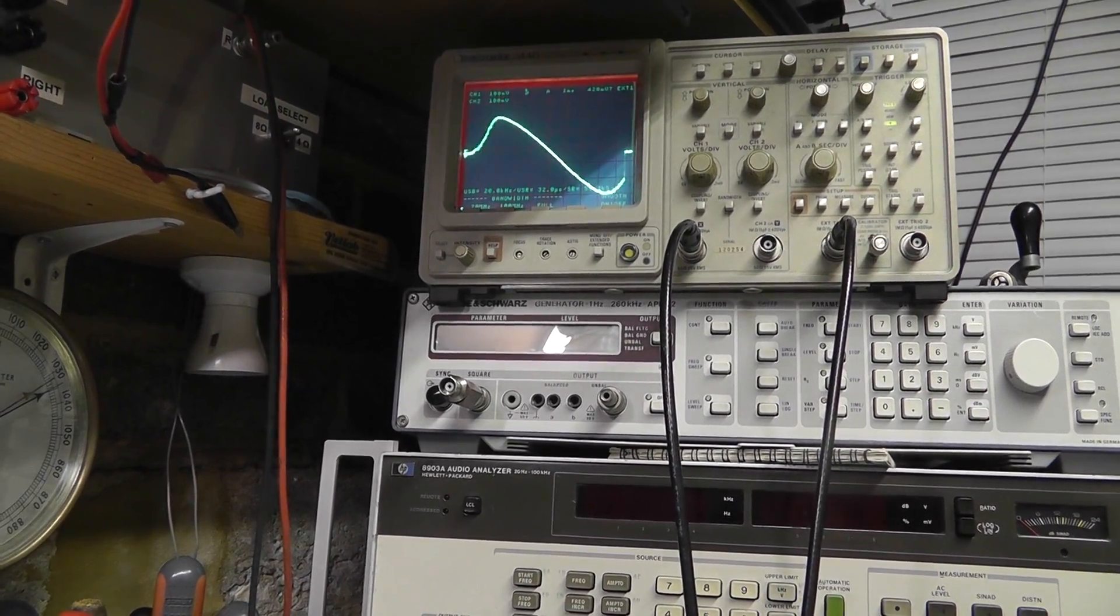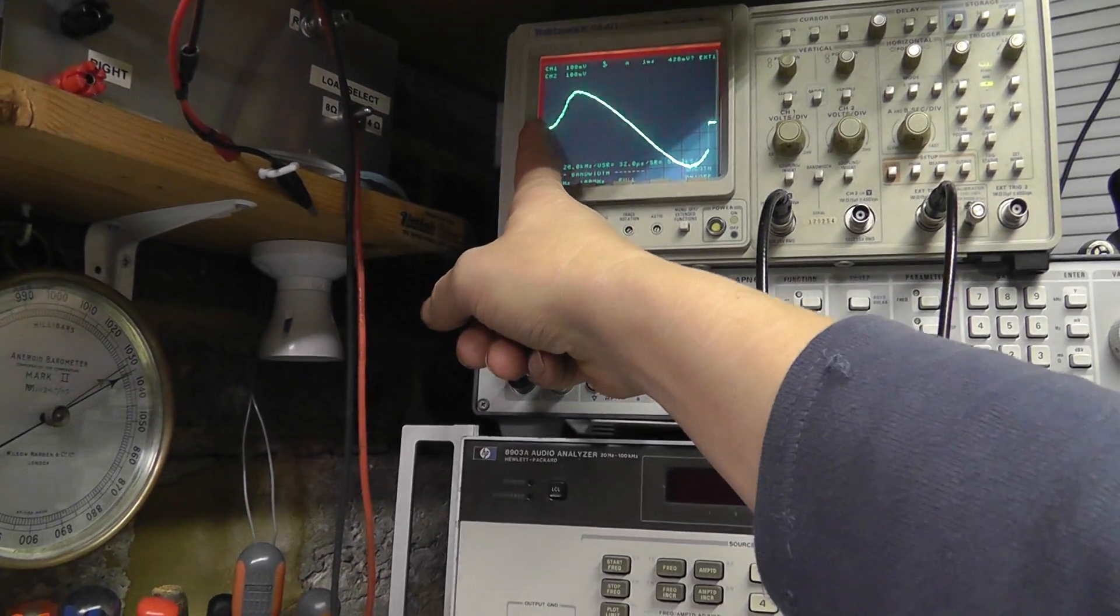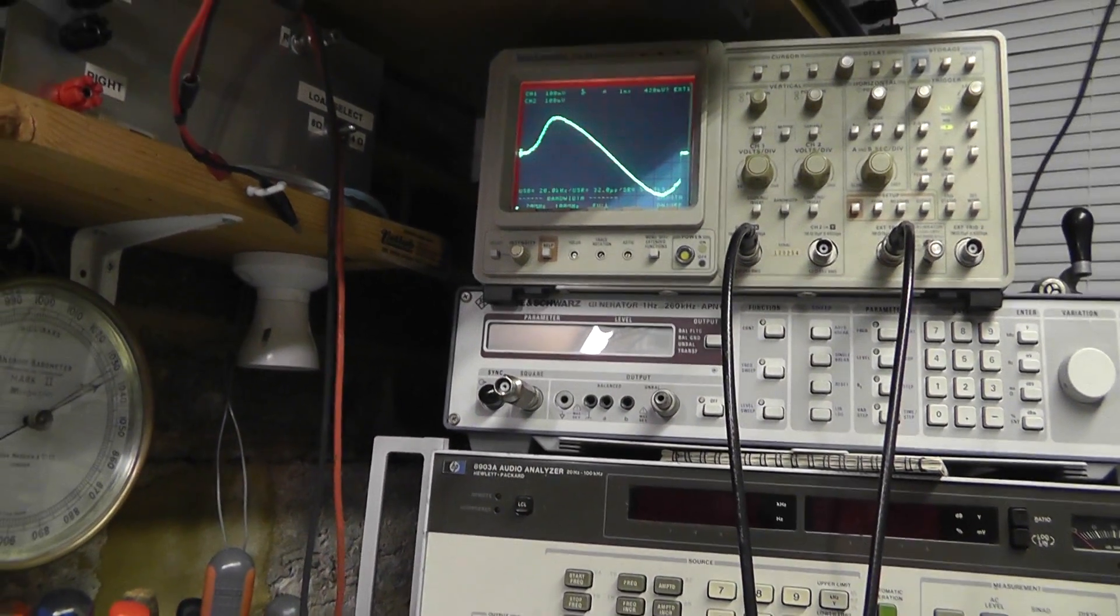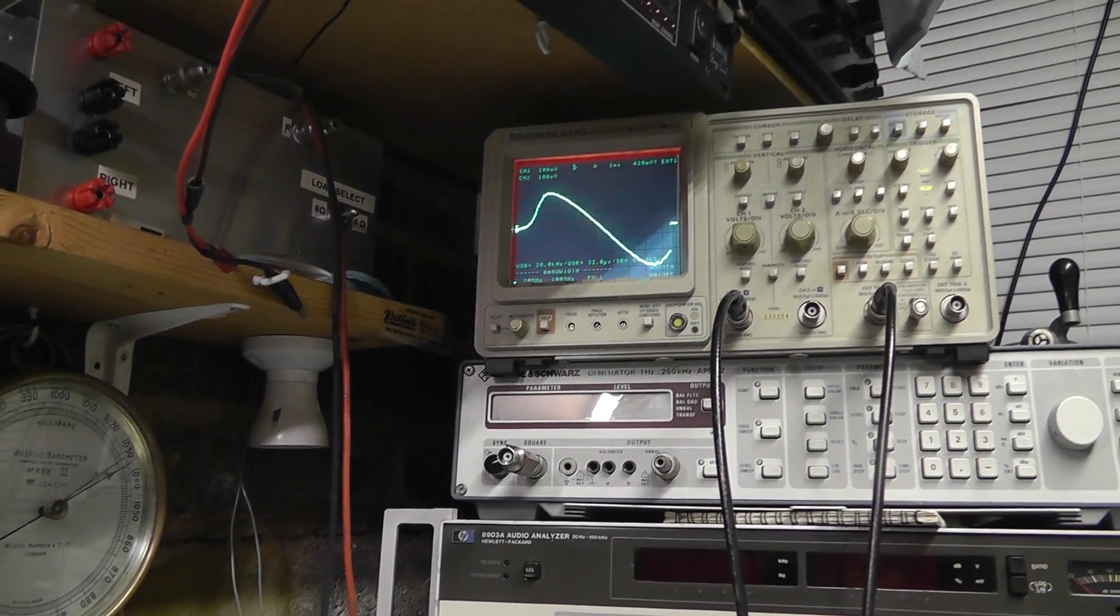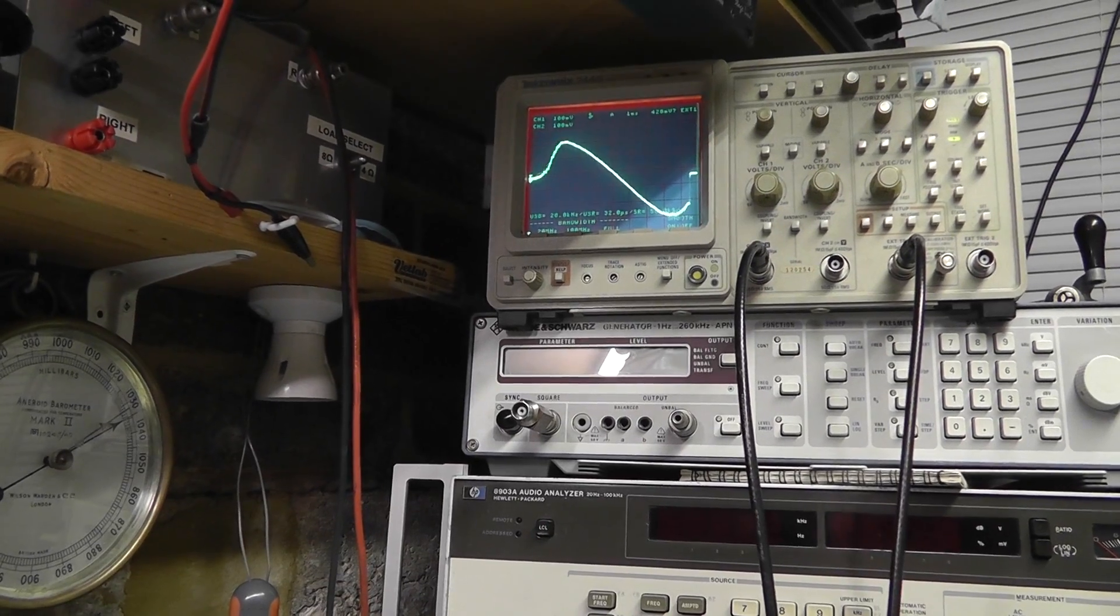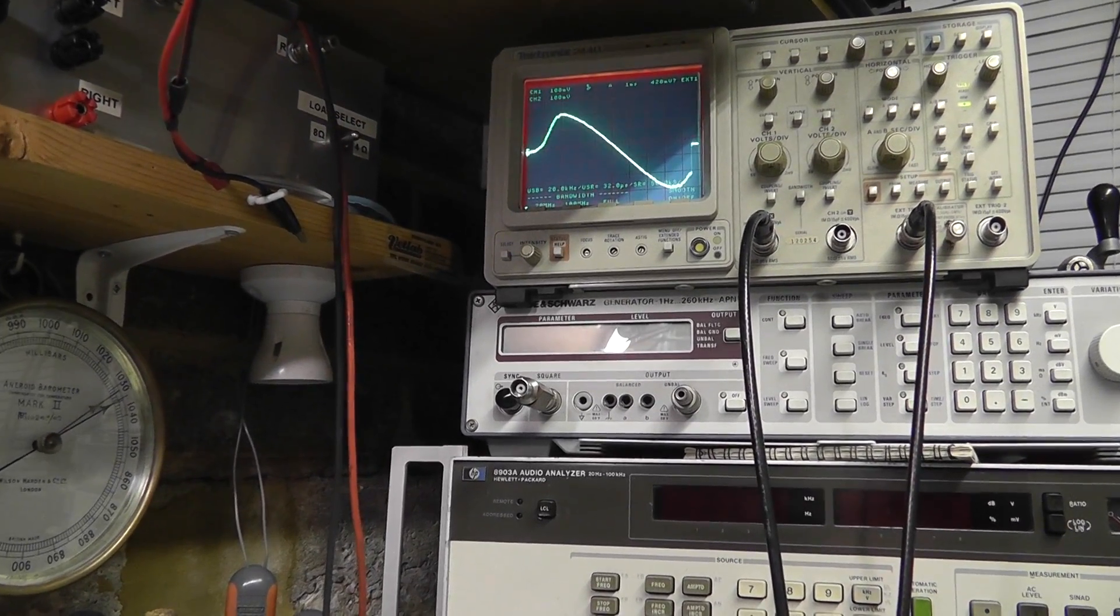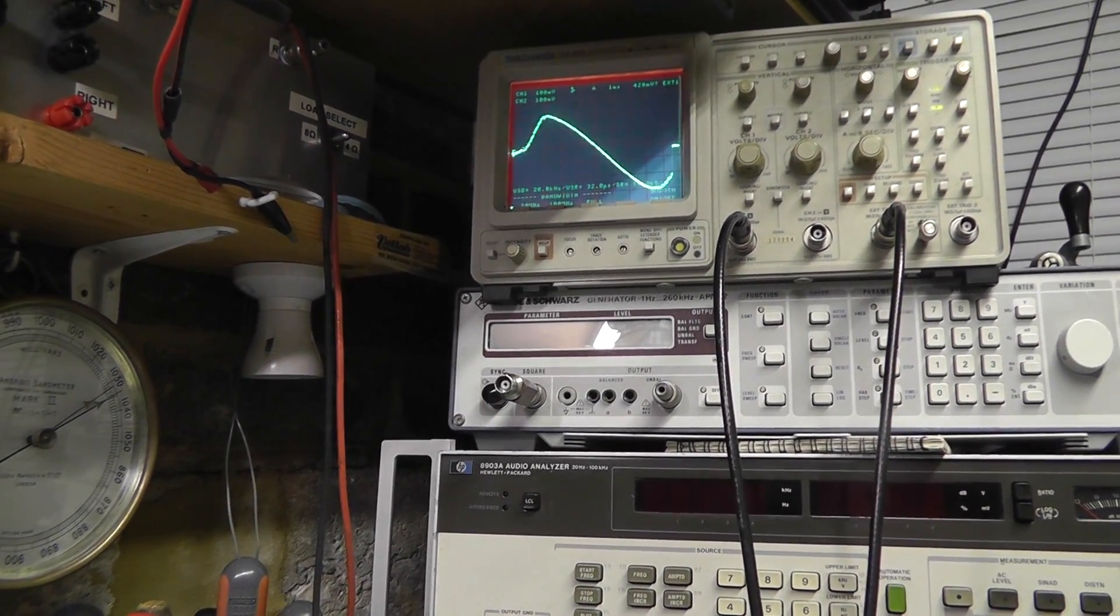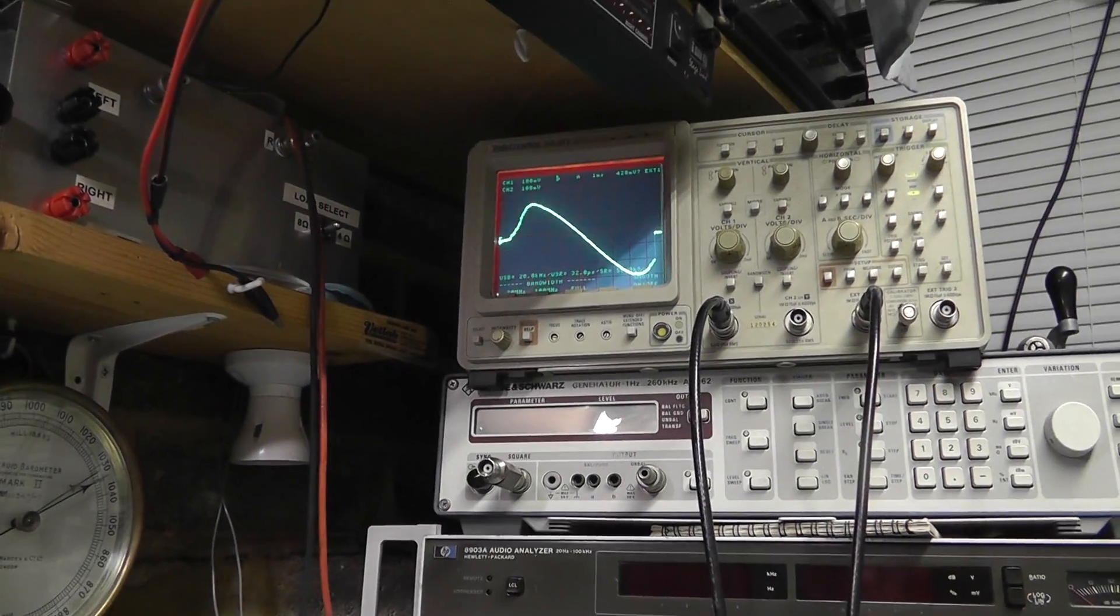So, see our sweep frequency here? This is the start frequency, that's the stop frequency. So somewhere in the middle we want our 10.7 reference. Now there's a number of ways of doing that. One way is to have a 10.7 MHz oscillator nearby, and use that as a heterodyne.